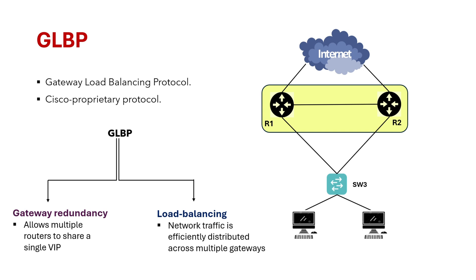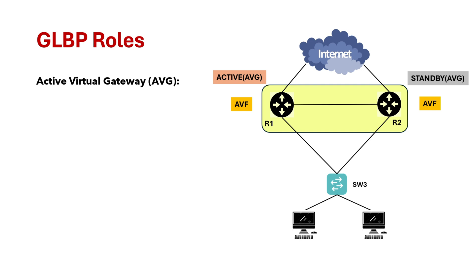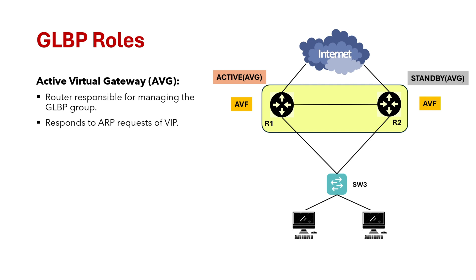In order to understand how GLBP works, you need to know the roles a device takes when you configure GLBP. GLBP operates in two primary roles: AVG and AVF. AVG stands for Active Virtual Gateway — it is the router responsible for managing the GLBP group. It responds to ARP requests for the virtual IP address.